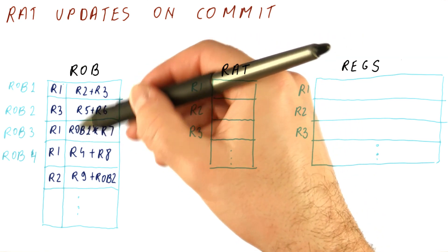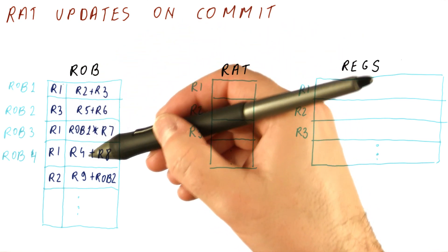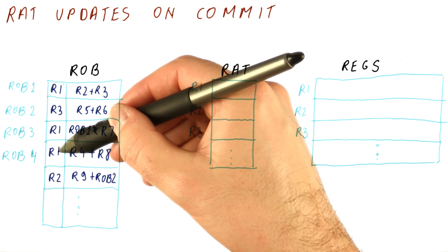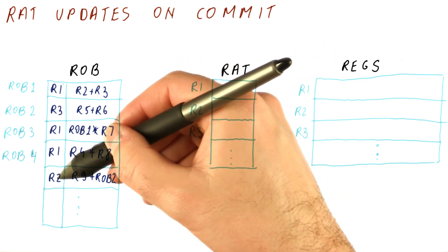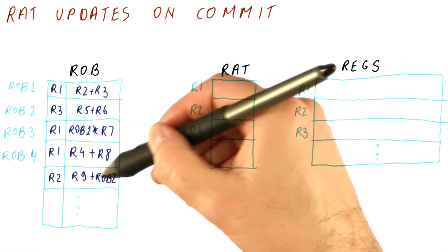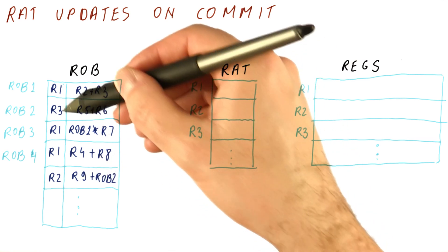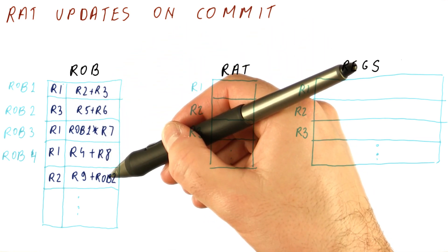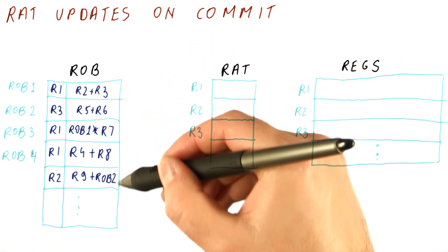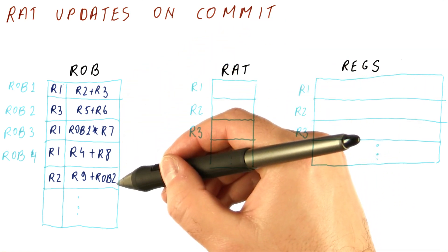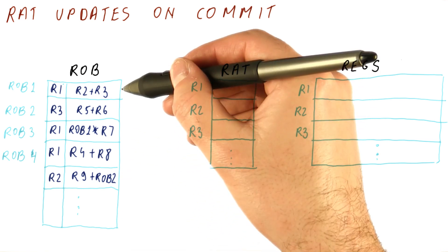It's ROB1 here because we were really using R1 and it got renamed this way. And then R1 equals R4 plus R8, and R2 equals R9 plus ROB2, because it was really using R3 but it got renamed this way. Let's say that all of these instructions have finished and put the results in the ROB, and now it's time to commit them.